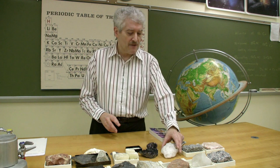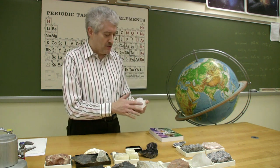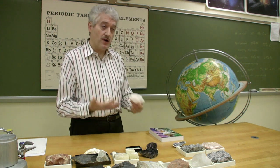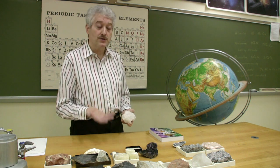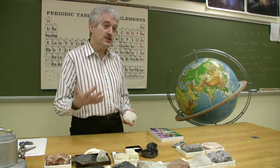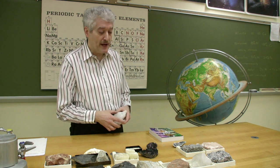A third thing we look at for a mineral is its luster. Some minerals are glassy in appearance, others are metallic, and some are dull and earthy. We use common terms to describe what they look like.